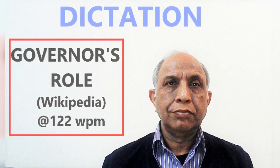India follows the principle of decentralization and a dual set of governments functioning at the central and the state level. The governor is the nominal head of the state and performs similar functions and duties like the president does for the Republic of India. The governor is, however, the head of the state as well as the representative in the union government. Thus, the governor performs a dual role.